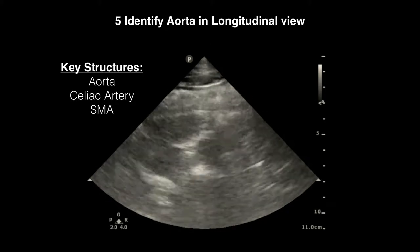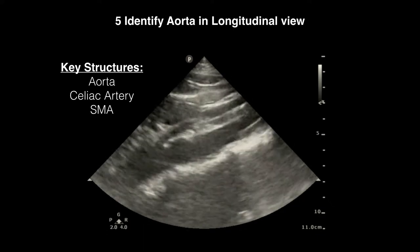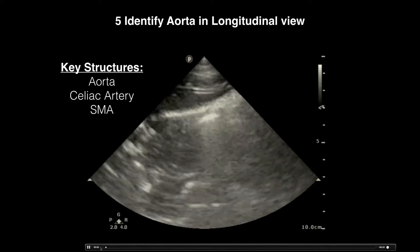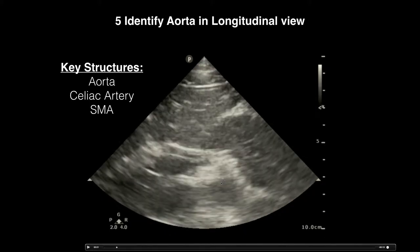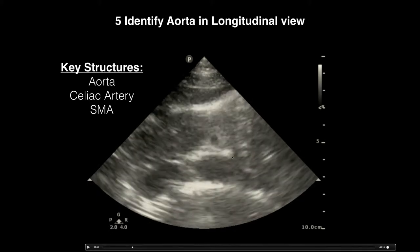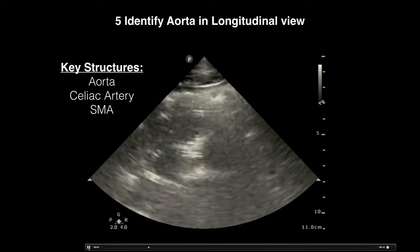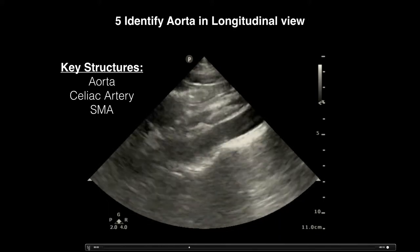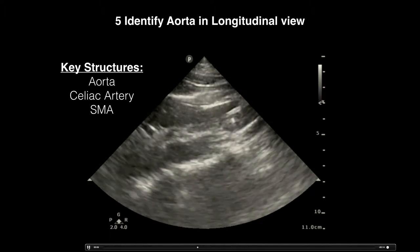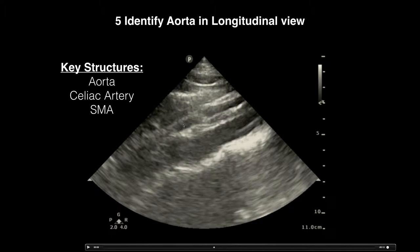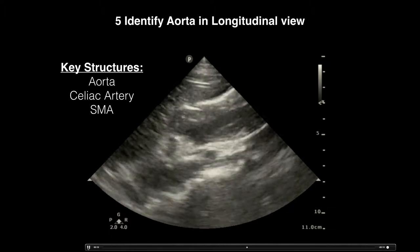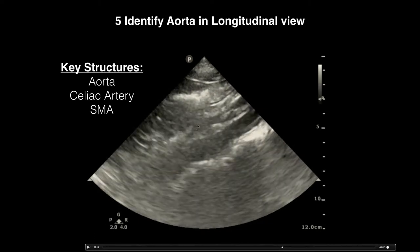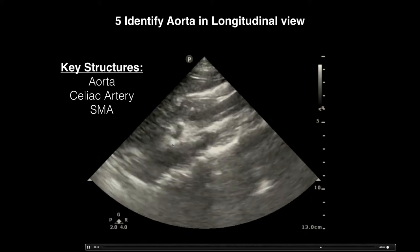The last view is the longitudinal view of the abdominal aorta. Center the aorta in the short-axis view, then turn 90 degrees clockwise to get the long axis. You can then see parts of the SMA and the celiac artery going anteriorly. Another static long-axis view shows the aorta with the SMA coming inferiorly and the celiac artery going directly anteriorly or sometimes superiorly.